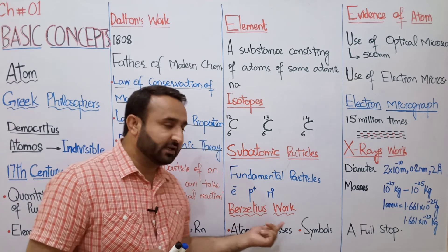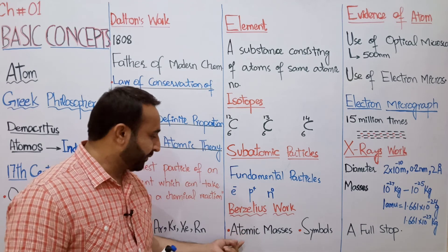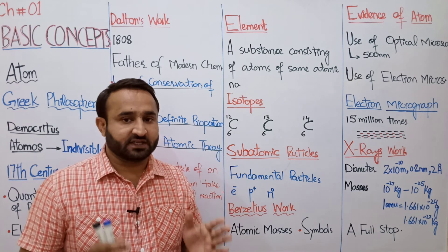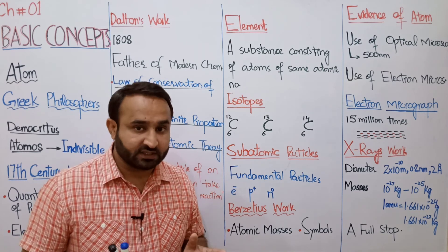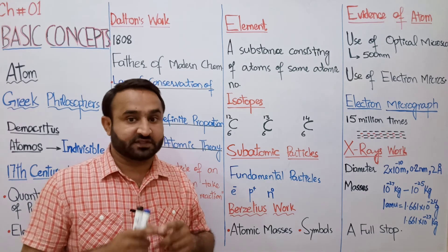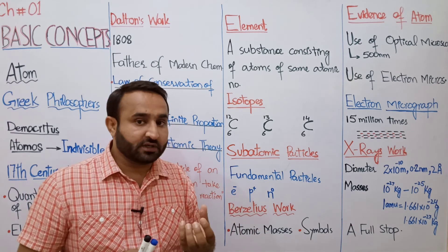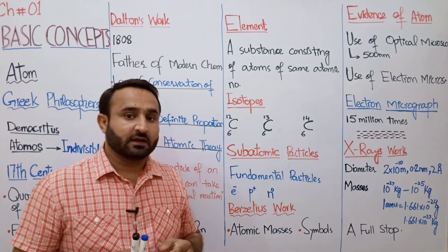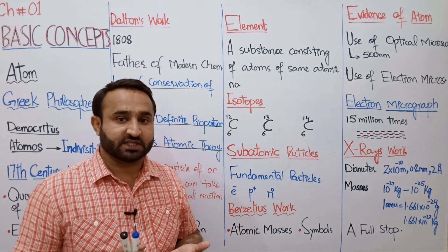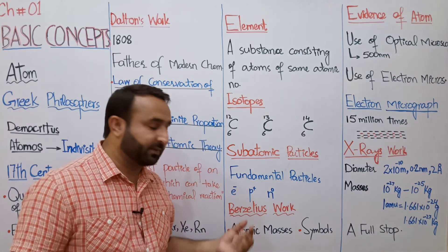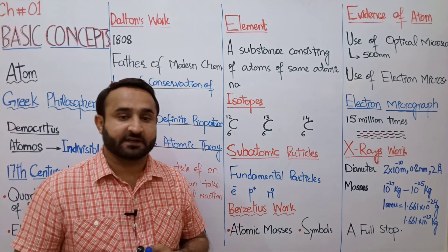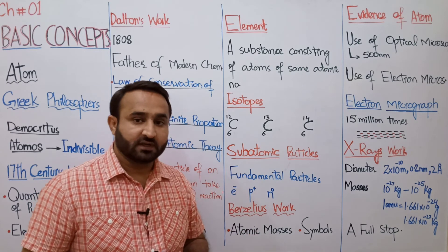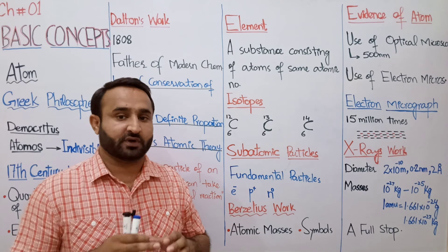Berzelius نے atom کے concept میں بہت اہم کام کیا۔ انہوں نے دس سال میں دو ہزار experiments کی اور اس وقت کے 59 elements کے atomic masses discover کیے۔ ان کی دی ہوئی atomic masses آج کی modern values کے برابر ہیں — مثلاً chlorine کا 35.41 دیا تھا جبکہ آج 35.45 ہے، اور copper کا 63.00 دیا تھا جبکہ آج 63.55 ہے۔ Atomic mass کی definition: the number of protons and neutrons in the nucleus of an atom۔